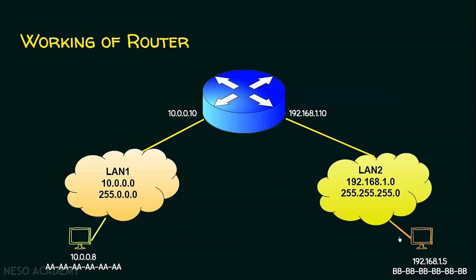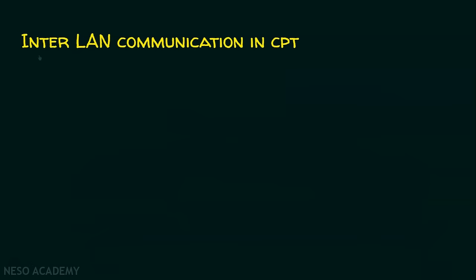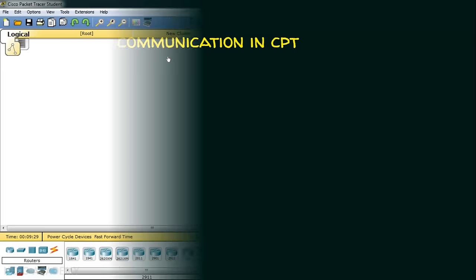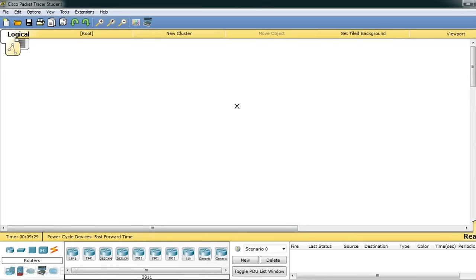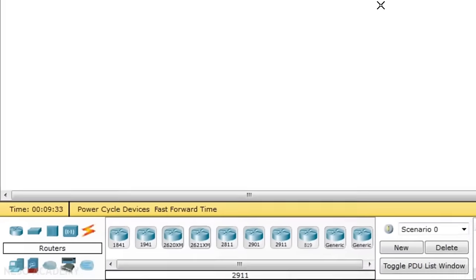We will replicate this scenario using Cisco Packet Tracer to establish inter-LAN communication. We will now open Cisco Packet Tracer. In the workspace, we will first create two local area networks.